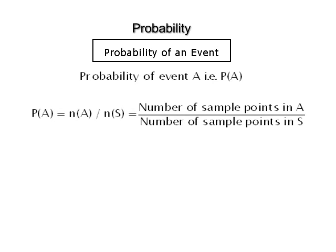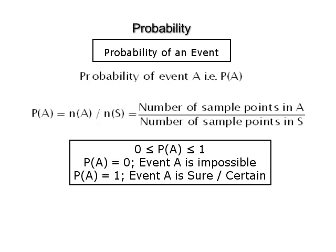Now we define probability of an event. Let A be an event in a sample space S. Then the probability of the event A, denoted by P(A), is defined as P(A) = n(A) / n(S), that is the number of sample points in A divided by the number of sample points in S. Note that the probability of an event lies between 0 and 1, both inclusive, that is 0 ≤ P(A) ≤ 1. If P(A) = 0, then A is an impossible event. If P(A) = 1, then A is a sure event.